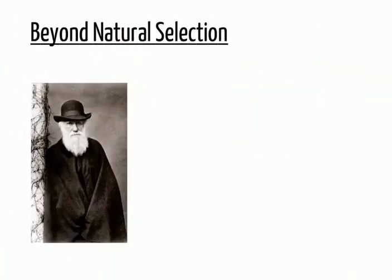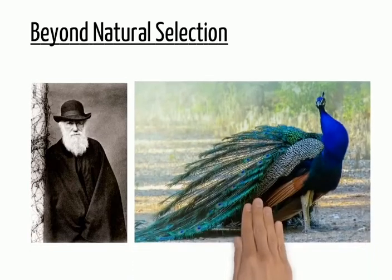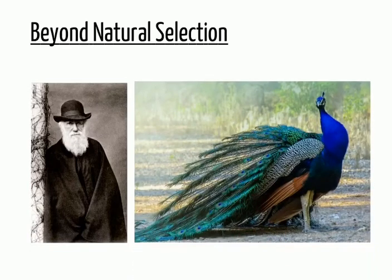However, Darwin went on to concede that natural selection could not explain all observed traits, as some traits appear at least ostensibly to be deleterious to an organism's survival. One such example Darwin provides is the plumage of the peacock.